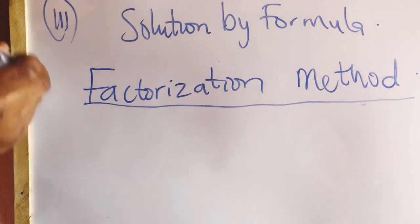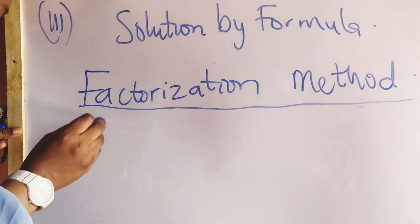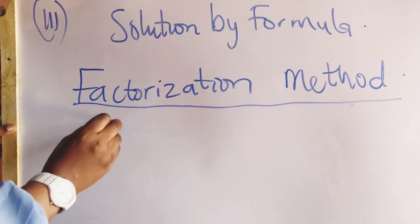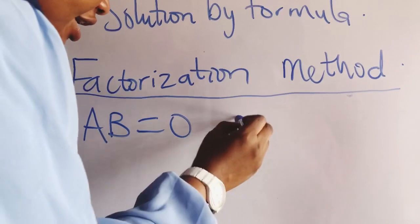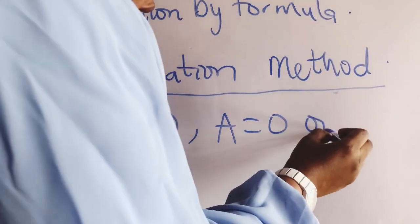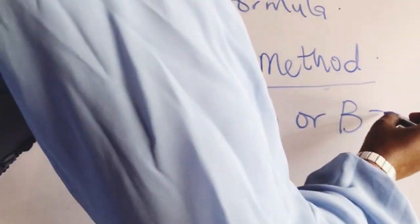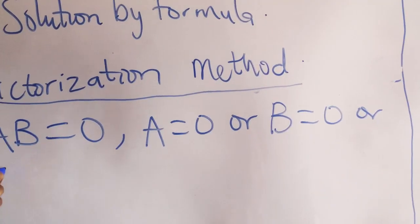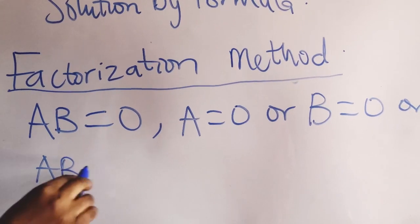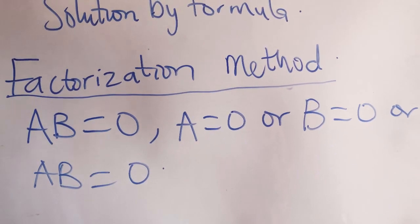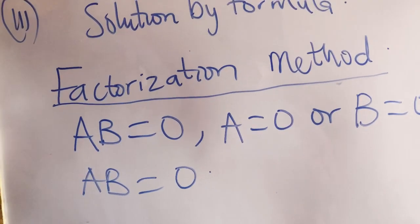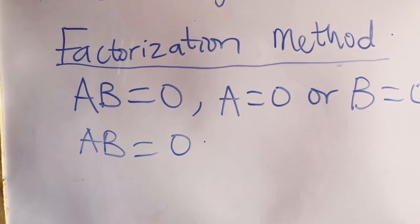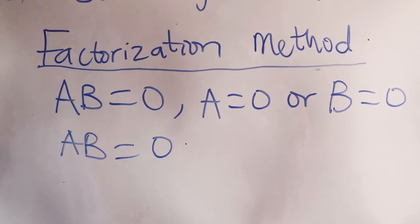So factorization method is in the form: if we say A multiplied by B is equal to 0, we know that it's either A is equal to 0 or B is equal to 0, or both A and B are equal to 0. So in factorization method, we must get two solutions.